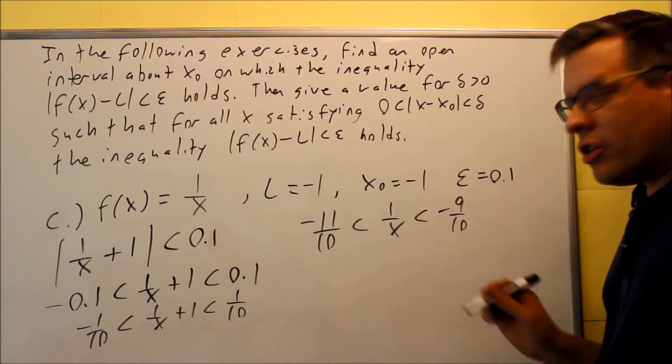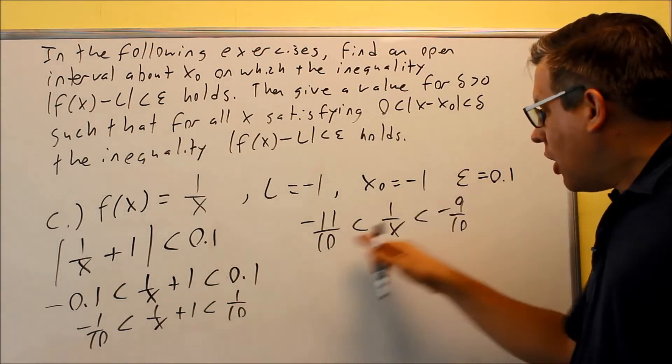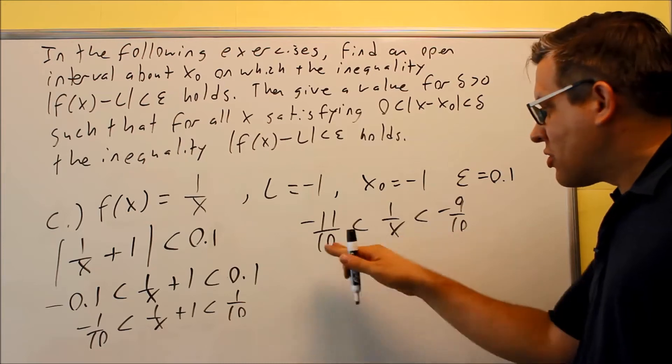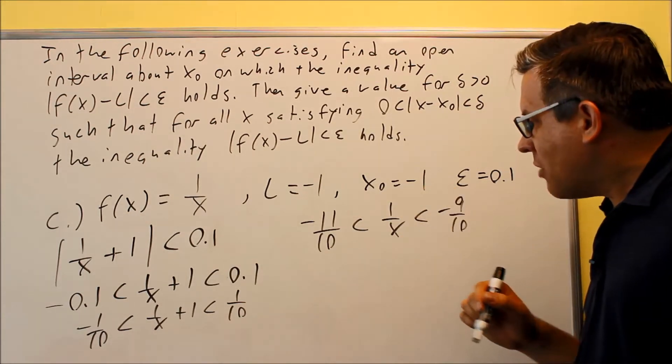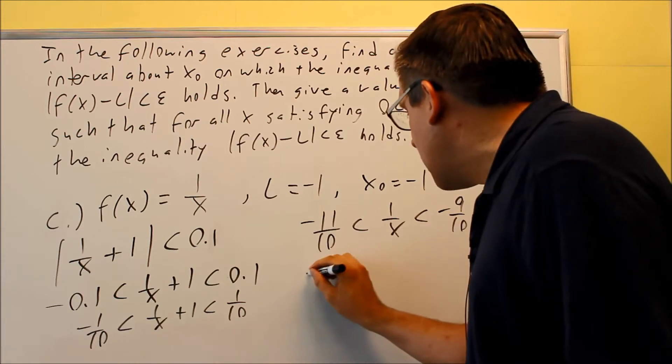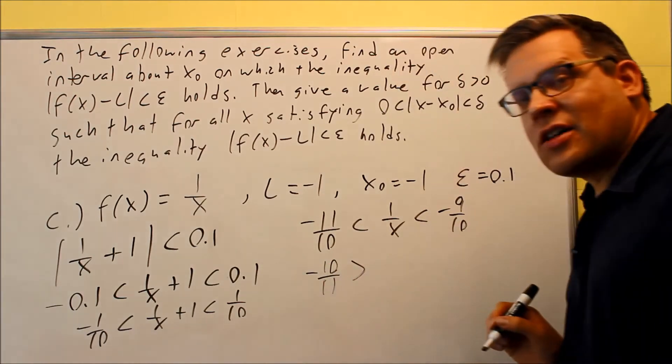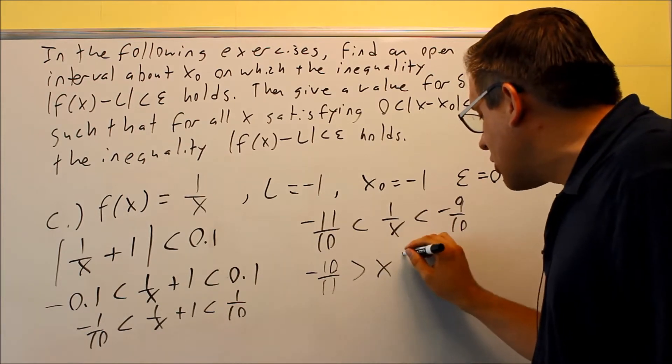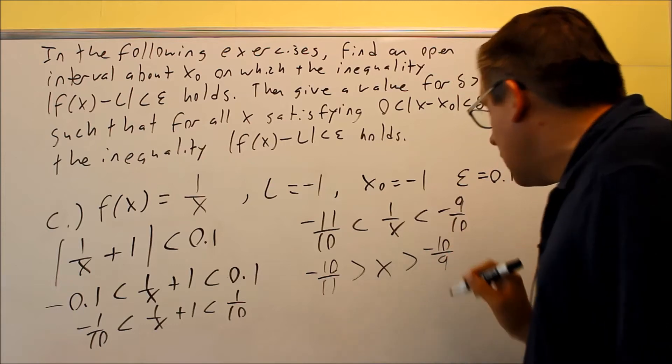We need to solve this for x. So we're going to take the reciprocals of all this. Now when you take a reciprocal of an inequality, you have to reverse the inequality symbols at the same time. So I'm going to flip this over, make that negative 10 elevenths. I'm going to change the inequality sign. This is just going to be x. This one switches also. Flip that one, negative 10 over 9.